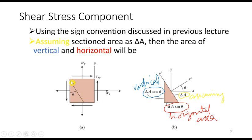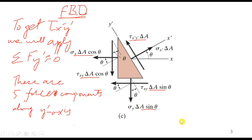We are interested in finding the shear stress component along this inclined plane, which is at orientation theta from the vertical axis. If we take this element and assume this surface as delta_A, then the area that is vertical will be the cosine component of delta_A, whereas the horizontal area will be delta_A times sin theta.